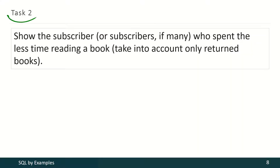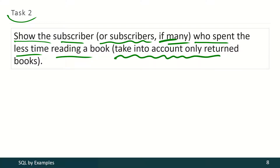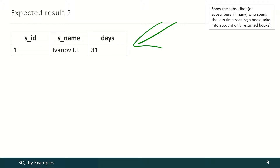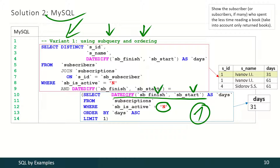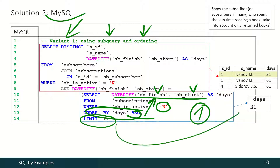In the second task we have to show the subscriber — or subscribers, if many — who spent the least time reading a book, taking into account only returned books. For MySQL, in the first variant we use a subquery and ordering. On the first step, we take into account only returned books, select the difference between the start and finish of the book reading process, order those time periods by length in ascending direction, and select the first record — which has the shortest time period.